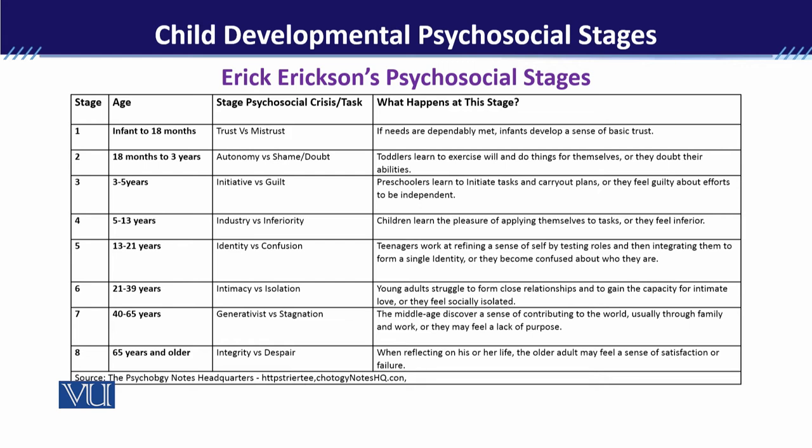Next stage is 5 to 13 years — Industry versus Inferiority۔ اس کے اندر بچہ کوشش کرتا ہے کہ جو چیزیں اس نے سیکھی ہیں وہ ان کو apply کرے۔ اگر اس کو praise ملے تو اس کی personality industrious بنے گی، اور اگر اسے ہر وقت یہ احساس دلایا جائے کہ whatever he or she is doing is not good enough، تو inferiority کا phenomena اس کے اندر develop ہو جائے گا۔ (Stage 5–13 years: Industry vs. Inferiority. The child tries to apply what they have learned. Praise leads to an industrious personality; constant negative feedback leads to feelings of inferiority.)